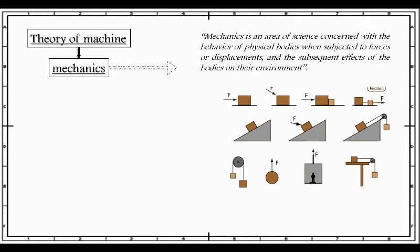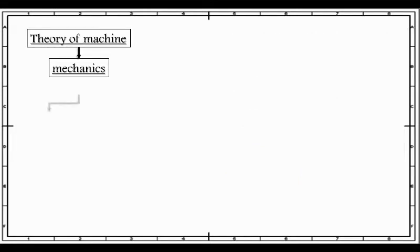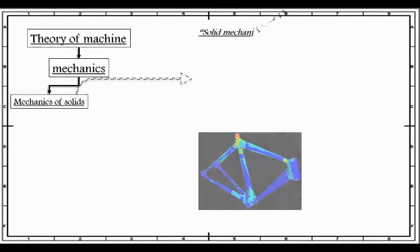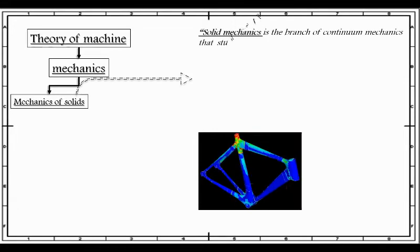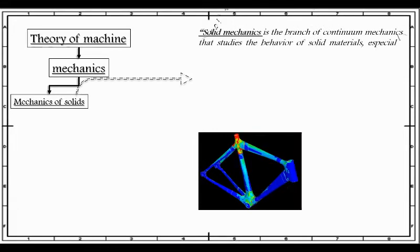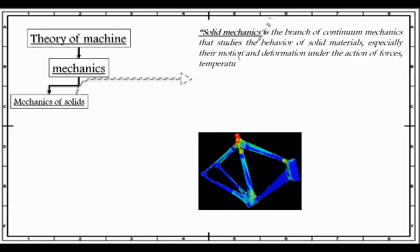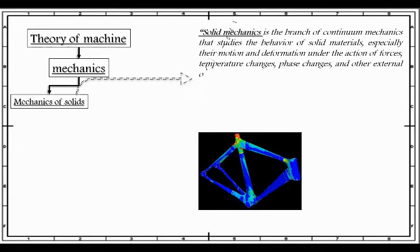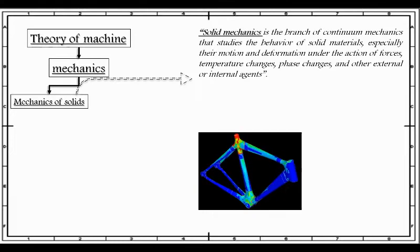The mechanics branch is further divided into two parts. One is mechanics of solid. Solid mechanics is a branch of continuum mechanics that studies the behavior of solid materials, especially their motion and deformation under the action of forces, temperature changes, phase changes, and other external or internal agents. The example is shown below.